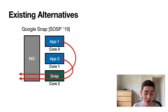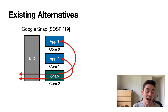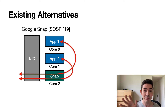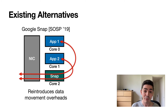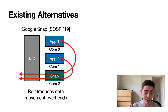There are existing alternatives that look at how to bring interposition back to kernel bypass. For example, Google uses a system called Snap, which implements the network stack as a separate process running on a different core. Because it forces traffic from all applications to go through Snap, it is able to implement some of these policies usually implemented inside the kernel. The problem is that it also has to reintroduce data movement overhead, because data has to hop between different cores before going out or before reaching the application.